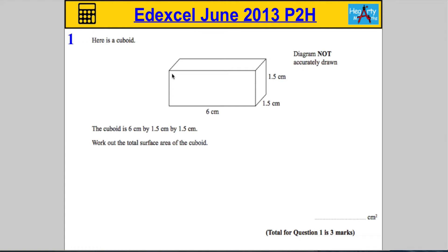Question one: here is a cuboid and we're told the cuboid is 6 centimeters by 1.5 centimeters by 1.5 centimeters. We're asked to work out the total surface area of the cuboid. The total surface area is essentially found by working out the area of all the faces and adding them together.